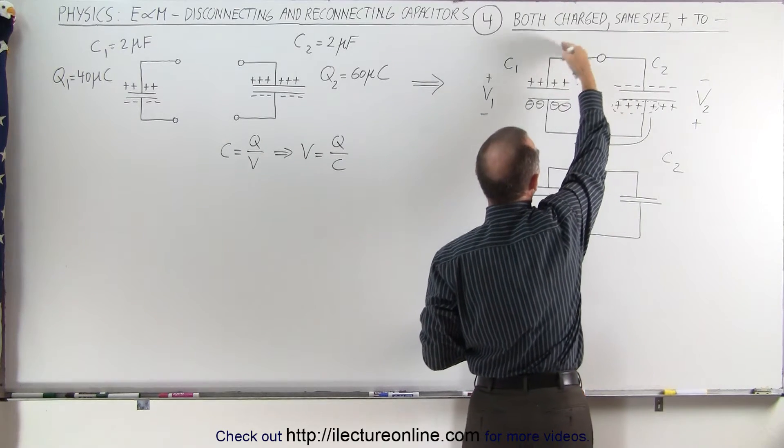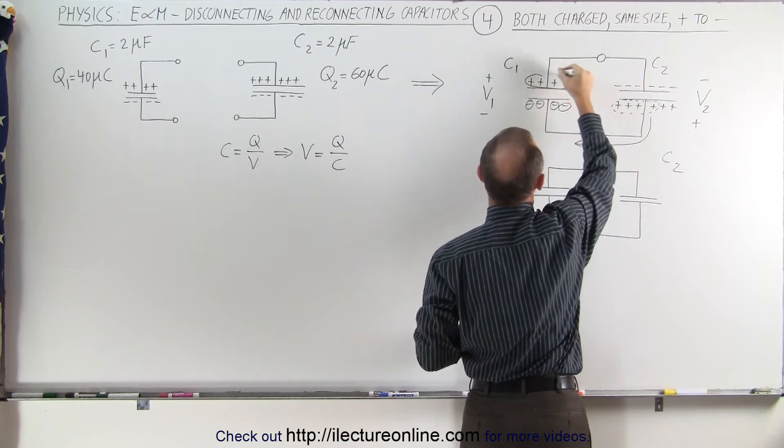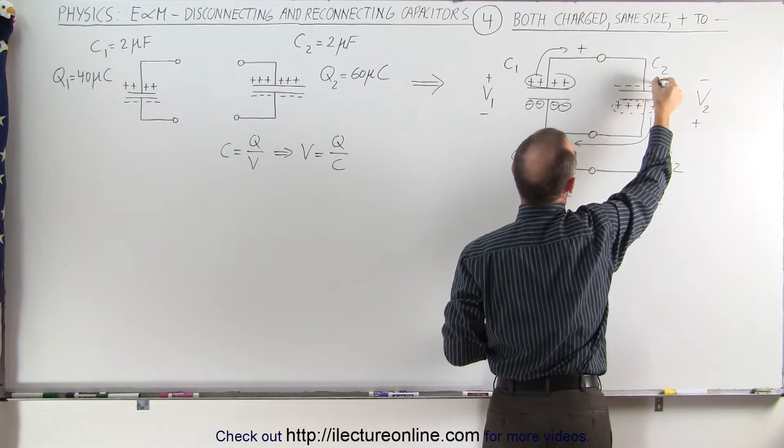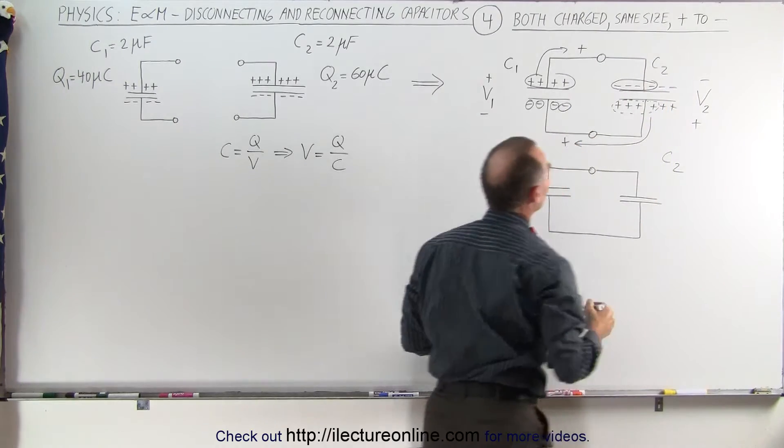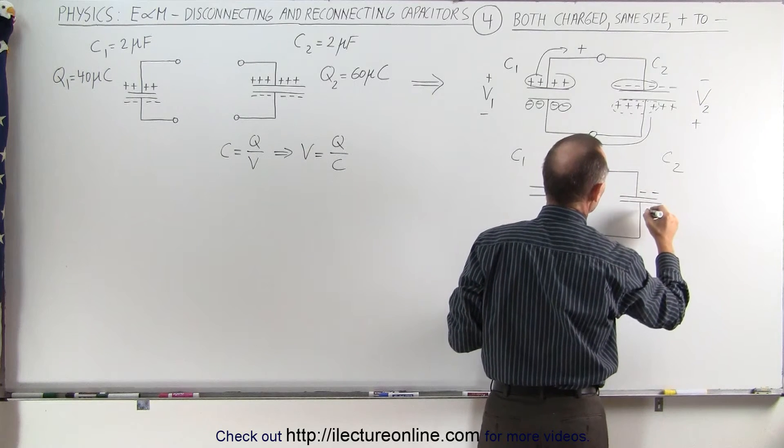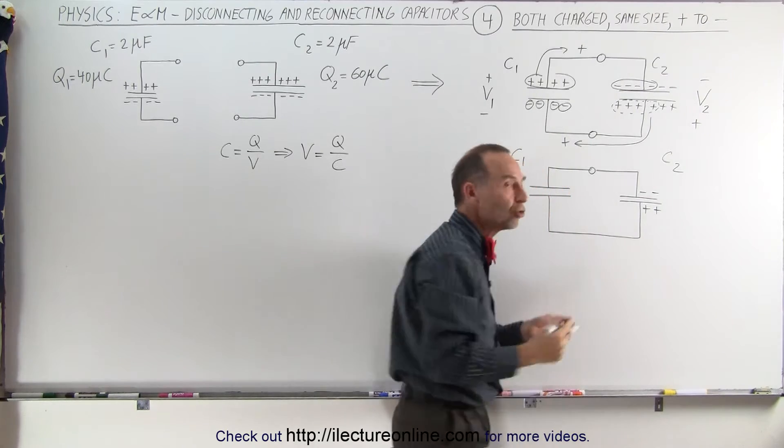That causes these positive charges to move over here because they're attracted to these negative charges. So these four charges march along in this direction and negate these negative charges. When that happens, you end up with only two negative charges there and two positive charges, and this capacitor will now be uncharged.